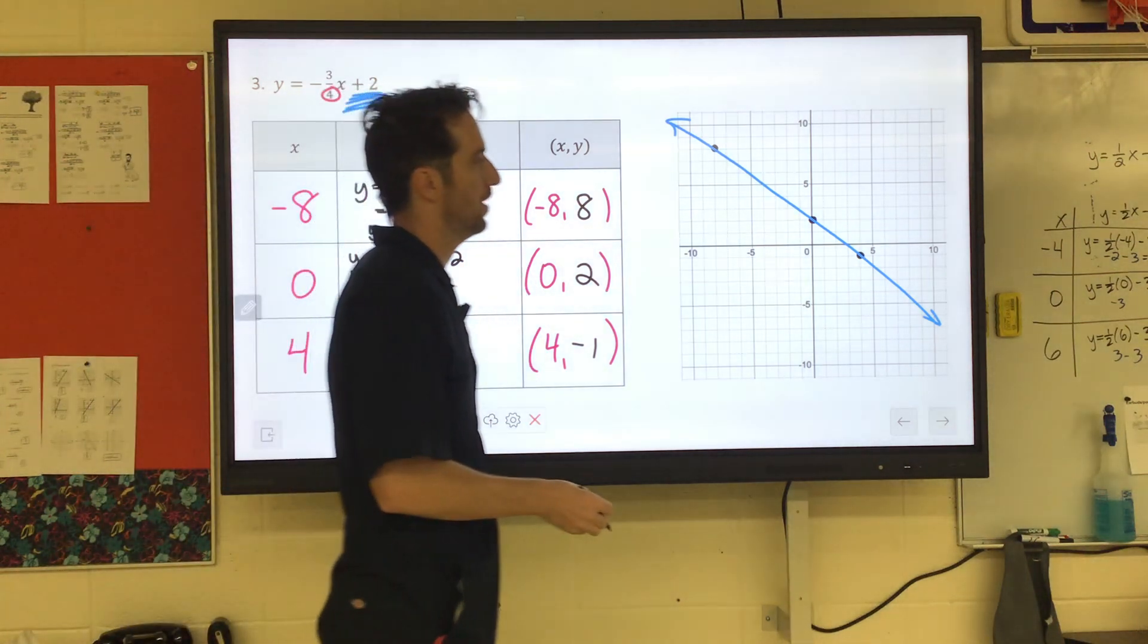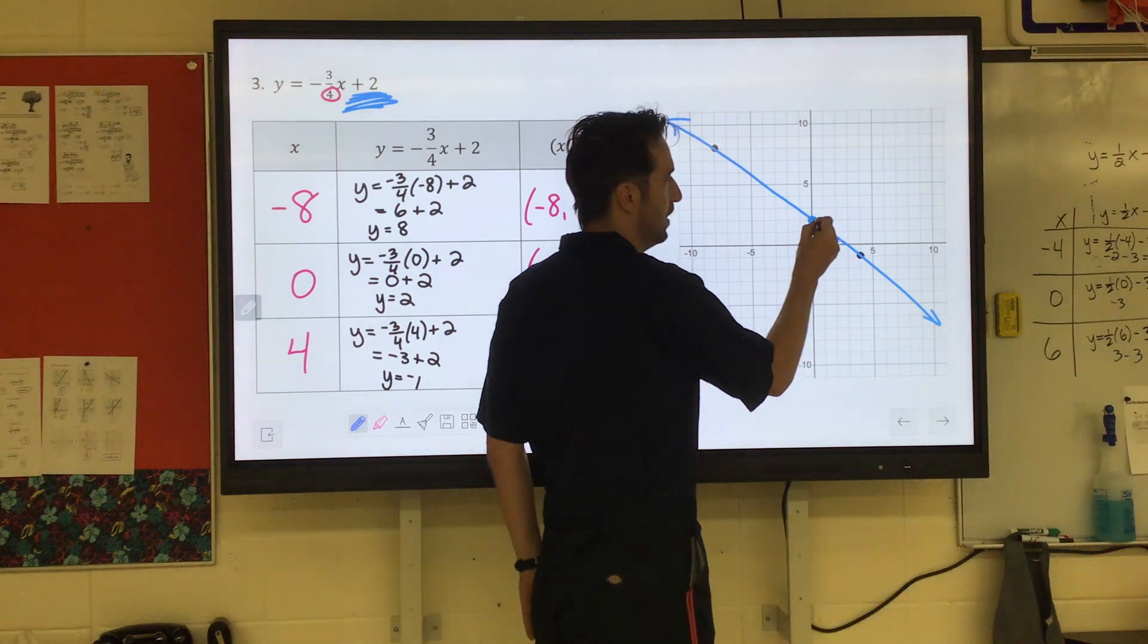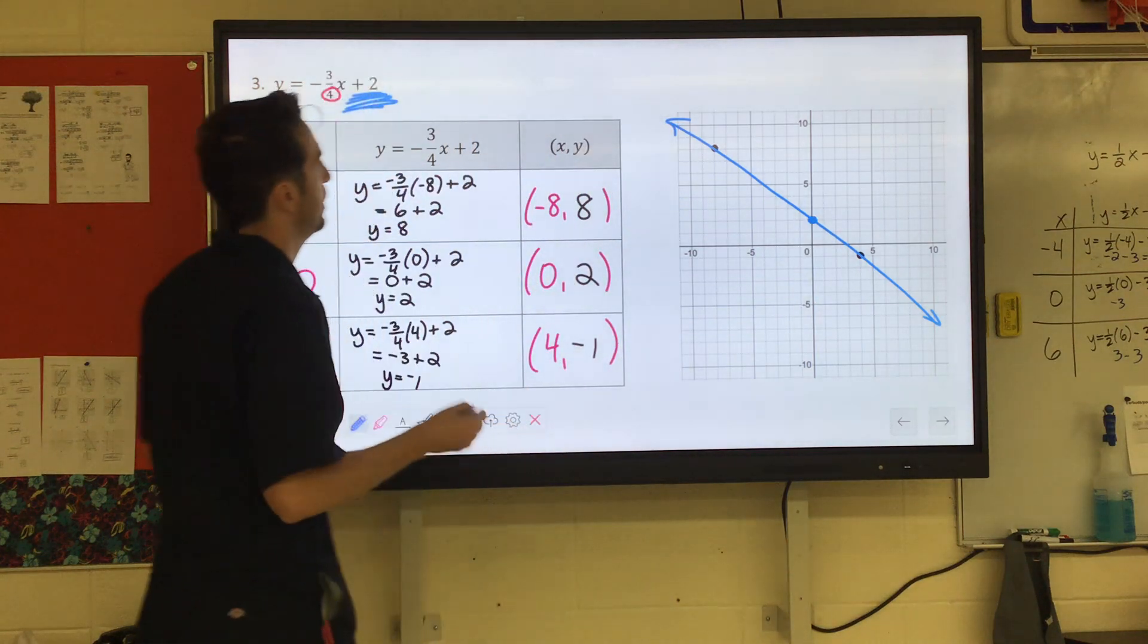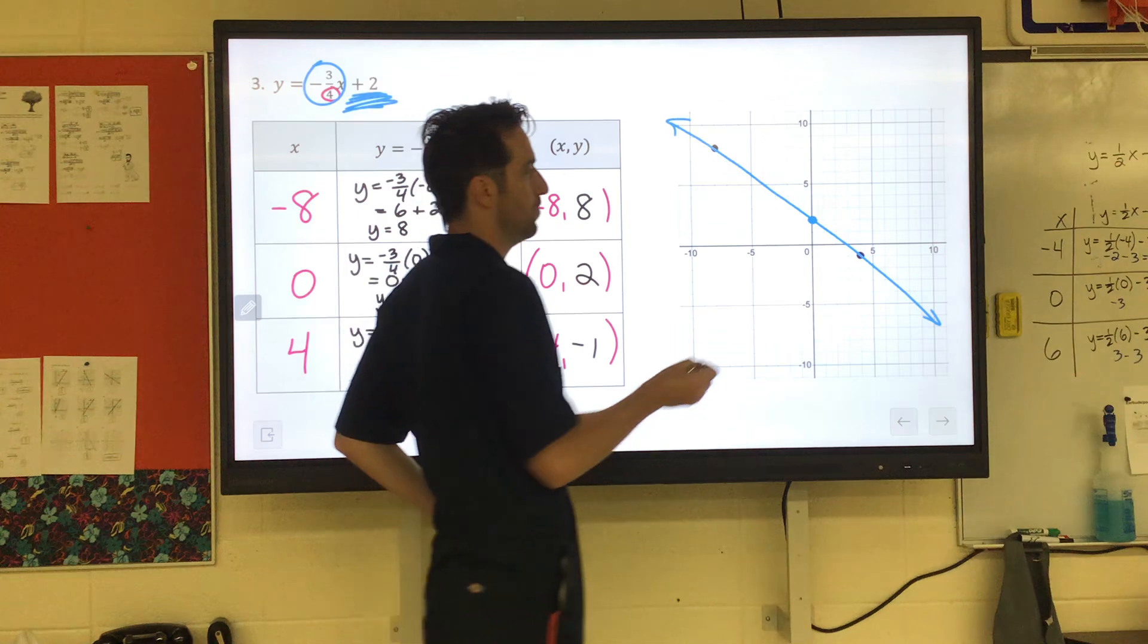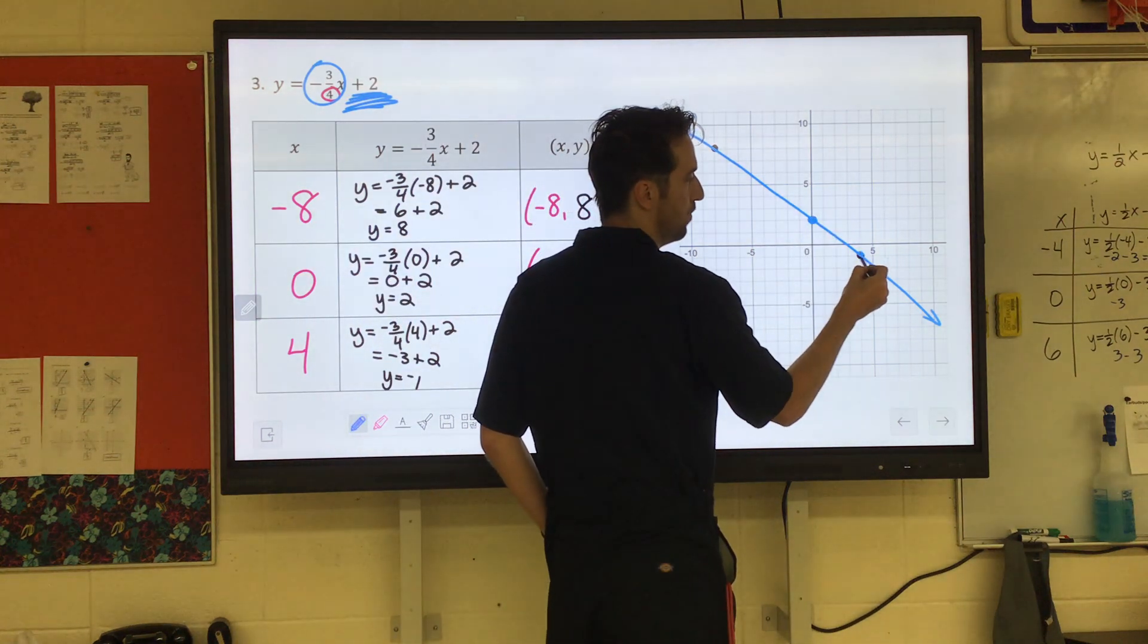So if we were to graph it in slope intercept form, remember we start with the y-intercept. It's where it crosses the y-axis. It would start at two, and then you use your slope to find your next point. Our slope is negative three over four, so from that dot we would go down three, right four.